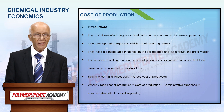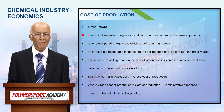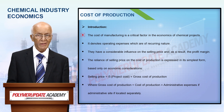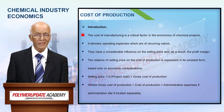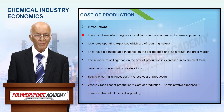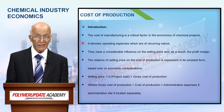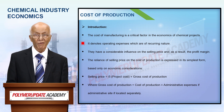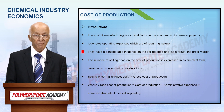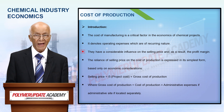First let us introduce the topic. In chemical project economics, cost of production plays a key role. It represents operating expenses which are of recurring nature. They have significant impact on the selling price and ultimately profitability.